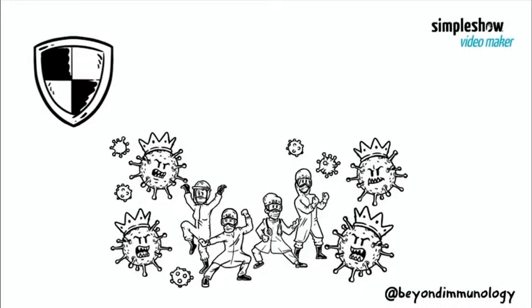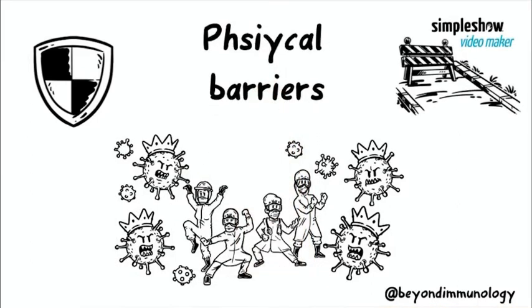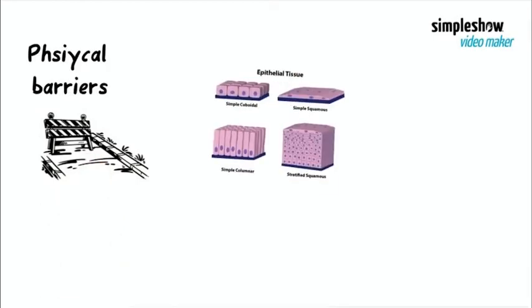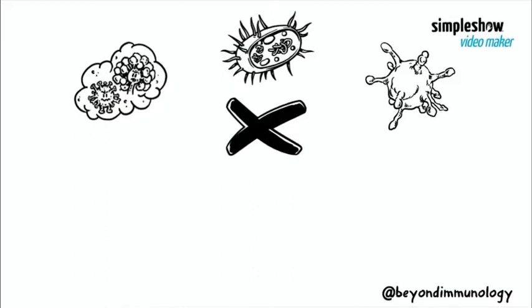The first line of defense against all kinds of microorganisms is physical barriers. Physical barriers are the epithelial surfaces of the body, usually found covering the skin and the internal lining membranes of different tracts such as the respiratory, gastrointestinal, and urinogenital tracts. One condition needed for infection to occur is that microorganisms such as viruses or bacteria can cross through these barriers and get inside our body.